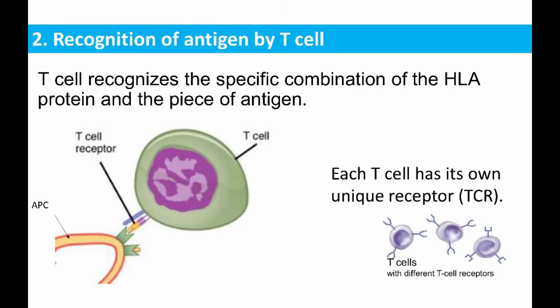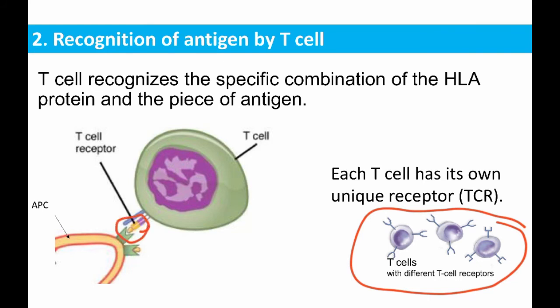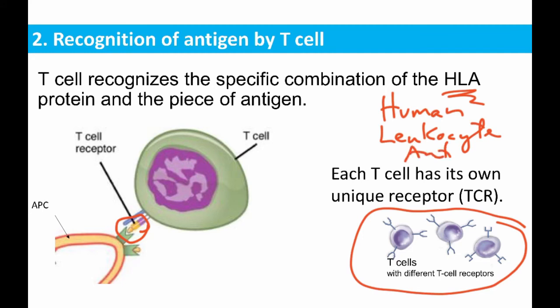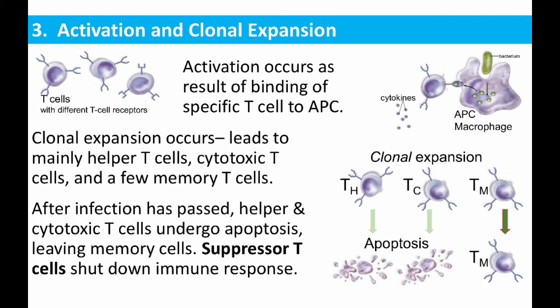In the lymph nodes or spleen, we have a huge array of T cells, each of which has a different cell surface receptor. You can see in the larger cartoon the binding between a T cell with a specific shaped receptor and the antigen shown to it by the antigen-presenting cell. HLA stands for human leukocyte antigen — it's another way of describing major histocompatibility complex. Once you have that binding, you have activation of the lymphocyte and clonal expansion.